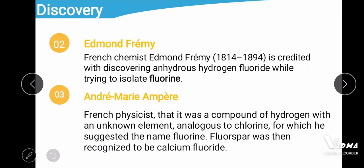The second discovery was by Edmond Frémy, a French chemist who is credited with discovering anhydrous hydrofluoride while trying to isolate fluorine. The third is André-Marie Ampère, during whose investigation fluorospar was recognized to be calcium fluoride. A French scientist suggested it was a compound of hydrogen with an unknown element analogous to chlorine, for which the suggested name given to that compound would be fluorine.